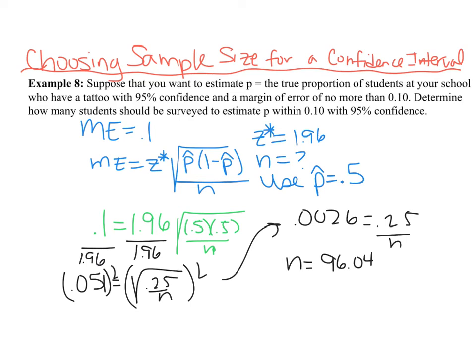I can't get 0.04 people. So actually what I'm going to do to make sure that my sample size is big enough is I am always going to round up. So it doesn't even matter how close you are to 96. You're going to always round up. You want your sample size to be big enough. So you need at least 97 students.